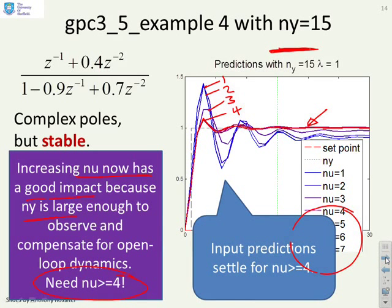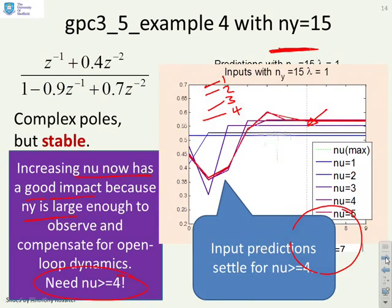So the input predictions settle if nu is greater than or equal to 4. And again, you can see there's nu equals 1, there's nu equals 2, there's nu equals 3. And clearly, once you get to 4 and above, you can see they're all pretty much following the same shape. And that's something you can use to say, okay, that's a big enough nu because the shape of the input trajectory has pretty much settled once nu has got to 4.